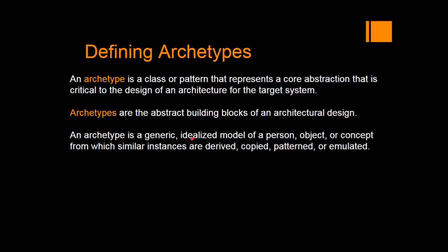It is a generic idealized model of a person, object, or concept from which similar instances are derived, copied, patterned, or emulated. We define a class and then derive classes, or make a pattern that can be copied for future patterns. Derived means we are adding more functionalities. Copied means we use the same thing as an exact copy. Patterned means using the template to derive more similar templates. Emulated means those components can emulate from the basic components.